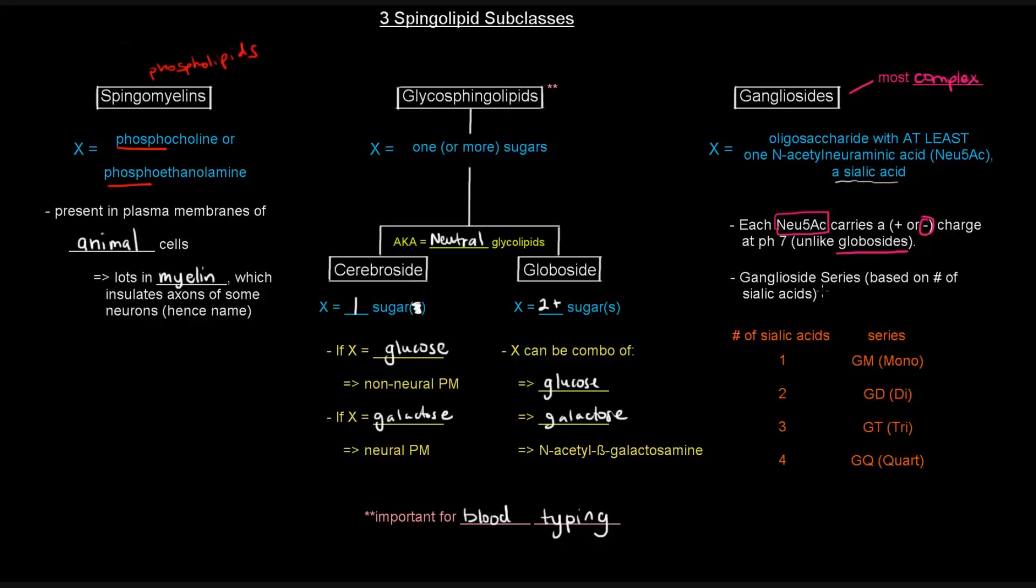Now, gangliosides can sometimes be classified based on their series, which is the series is based on the number of the sialic acids that are attached in that polar head group portion. So, if there's one sialic acid, it would be called part of the GM series. Which would probably be ganglioside mono. If there's two sialic acids, you'd have GD, di, meaning two.